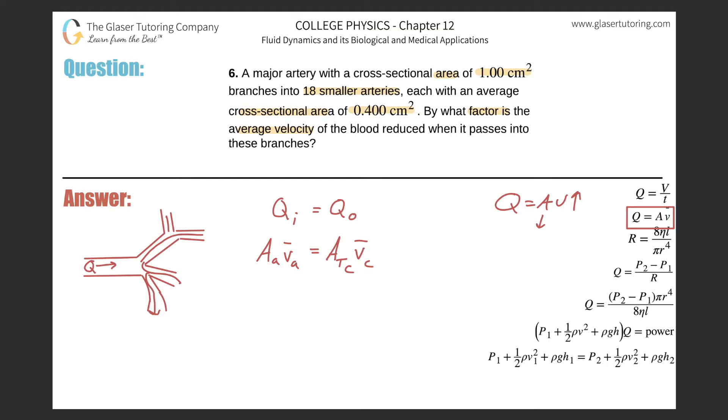So if there weren't all these branches, then we know that once blood passes from a larger tube into a smaller tube, the volume flow rate remains constant and the velocity will increase. But there's not one small branch after this major artery—there are 18 of them. So that's why the velocity of the blood will become reduced.